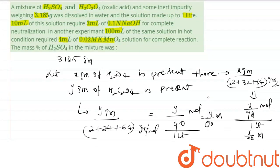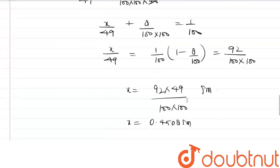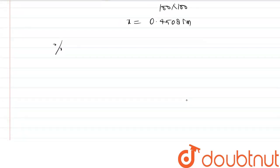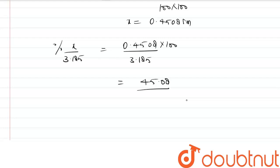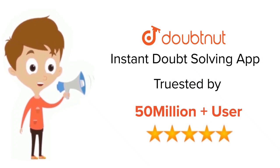We want the mass percentage of H₂SO₄. X = 0.4508 grams out of total 3.85 grams. So mass percentage = 0.4508/3.185 × 100 = 14.4%. I hope this answers your question. Thank you. For class 6 to 12, IIT JEE and NEET level — trusted by more than 5 crore students — download Doubtnut today.